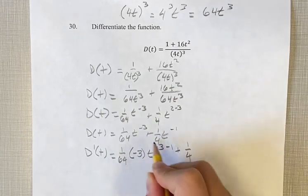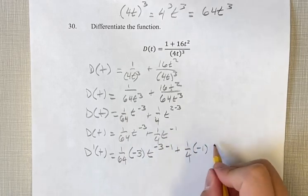Same thing with this term, plus 1 fourth. Bring the exponent down. Subtract by 1 for your new exponent.